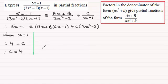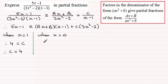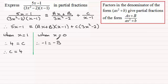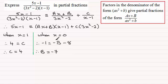Next I need to find another constant. The best thing here is to choose x equals 0, as that will eliminate the Ax term. When x equals 0, the left side is minus 1. The first term gives B times minus 1, so just minus B. The last term gives minus 2 times C, and since C is 4 that's minus 8. Rearranging gives B equals 1 minus 8, which is minus 7.